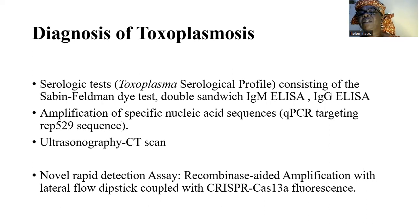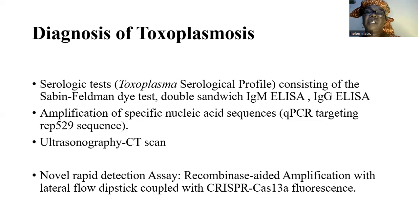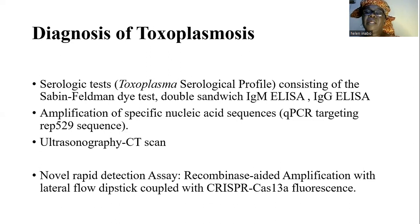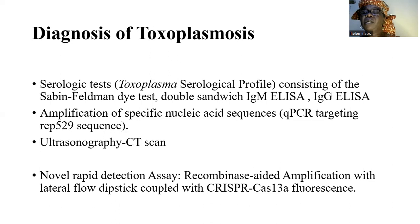More importantly, the quantitative polymerase chain reaction will be preferred, targeting the REP 529 sequence. You will also have the CT scan — computerized tomography scan — which can show abnormalities in the brain tissues. And recently, there is the novel rapid detection assay, which is a recombinase-aided amplification with lateral flow dipstick, coupled with CRISPR-Cas13a fluorescence.